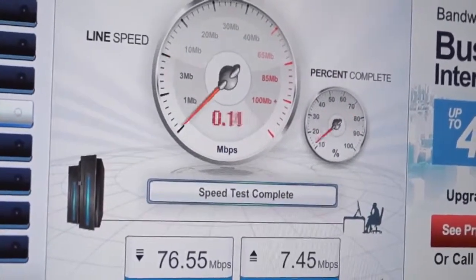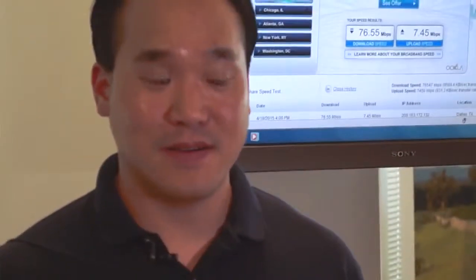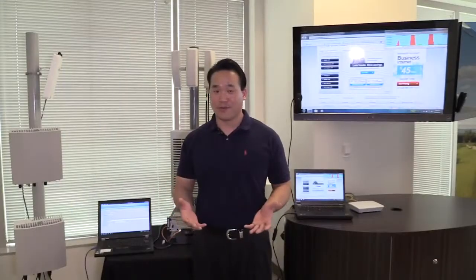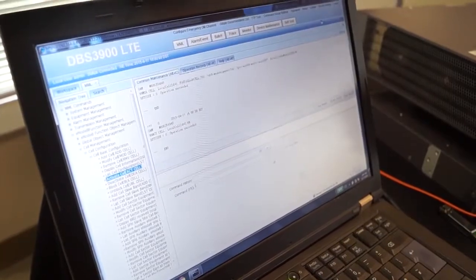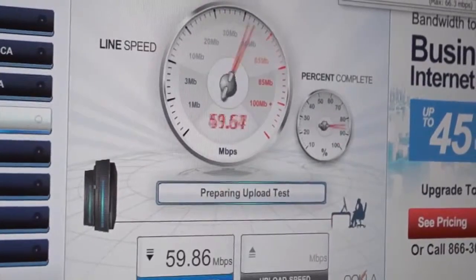So what I'll do now is I'm going to change the special subframe so we can shift some of the downlink throughput to the uplink throughput. We'll test again on the speed test and see, we'll see the shifting between the downlink throughput and the uplink throughput go up.